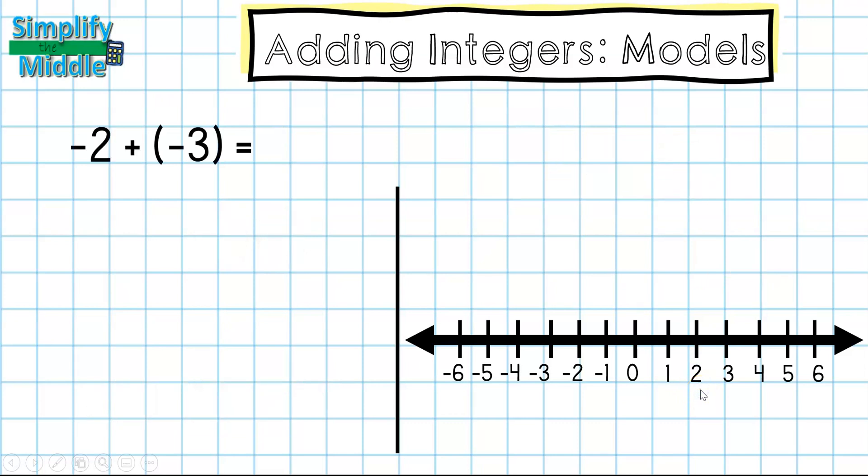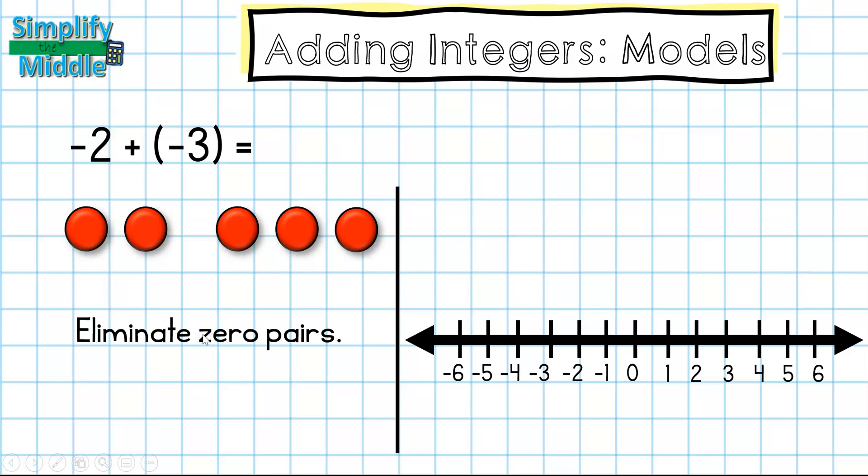My final example is negative two plus negative three. So now I have both negative numbers. I'm going to start with my two red counter chips and add three red counter chips to that. I'll eliminate any zero pairs but notice that I don't have two different colors so there are no zero pairs here. So I'll just count what's left one two three four five which is negative five.